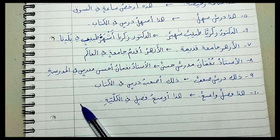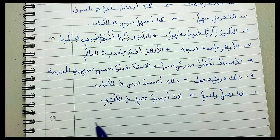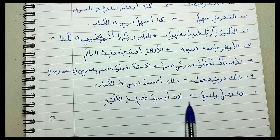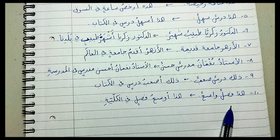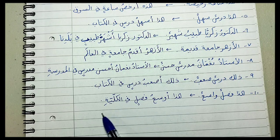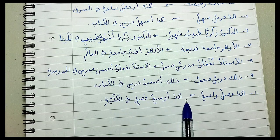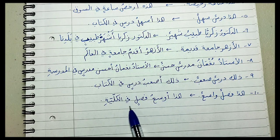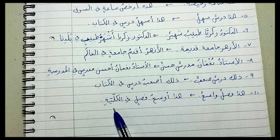ذلك أصعب درس في الكتاب — that is the most difficult lesson in the book. هذا فصل واسع → هذا أوسع فصل في الكلية — this is the most spacious classroom in the faculty. That's where we stopped in terms of homework. The remaining exercises will be set as homework and explained next lesson.